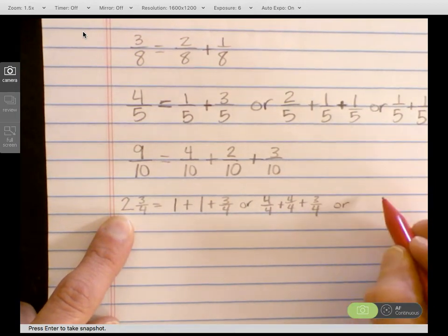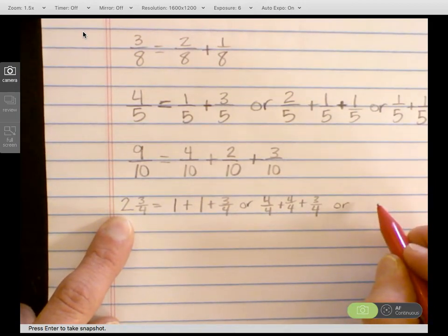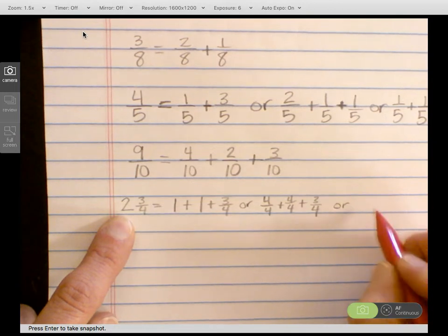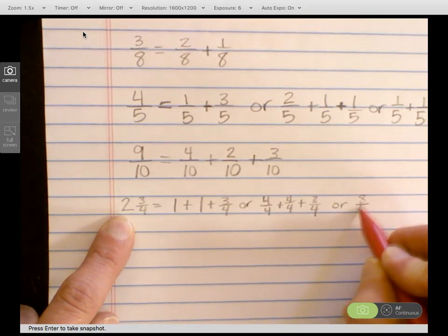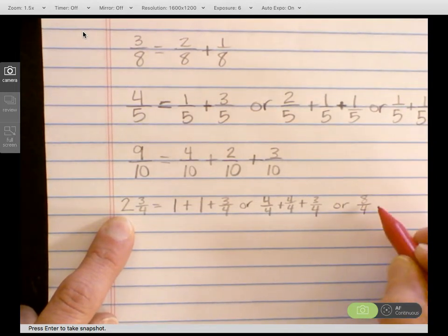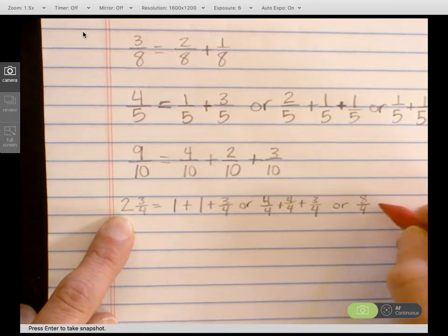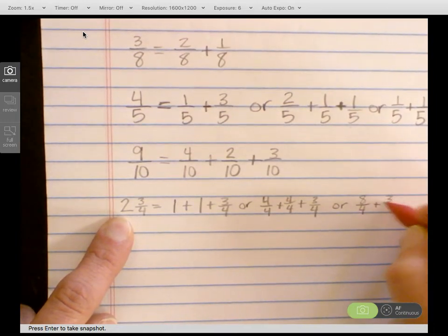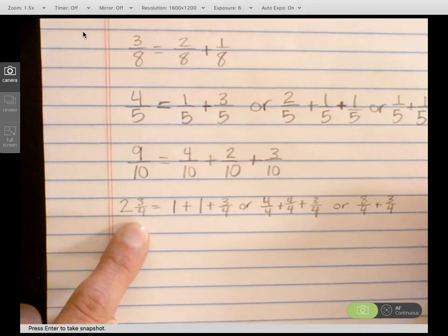Or I might even try to decompose my whole number using 8 fourths. 8 fourths is equivalent to 2 plus the fraction part of my mixed number, 3 fourths.